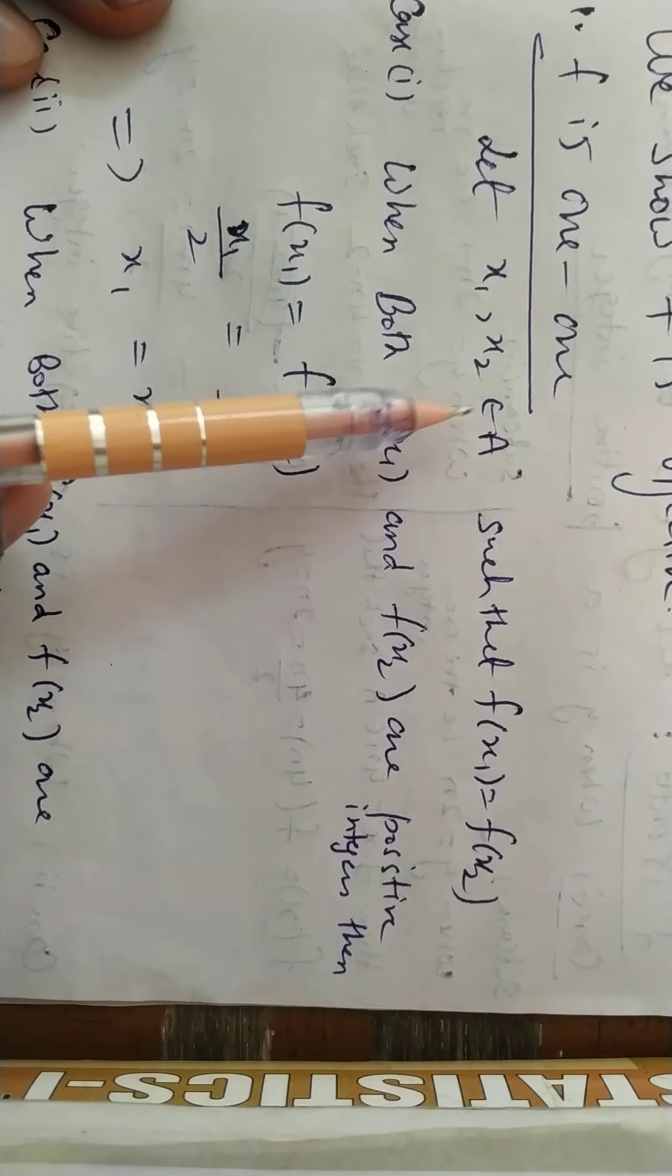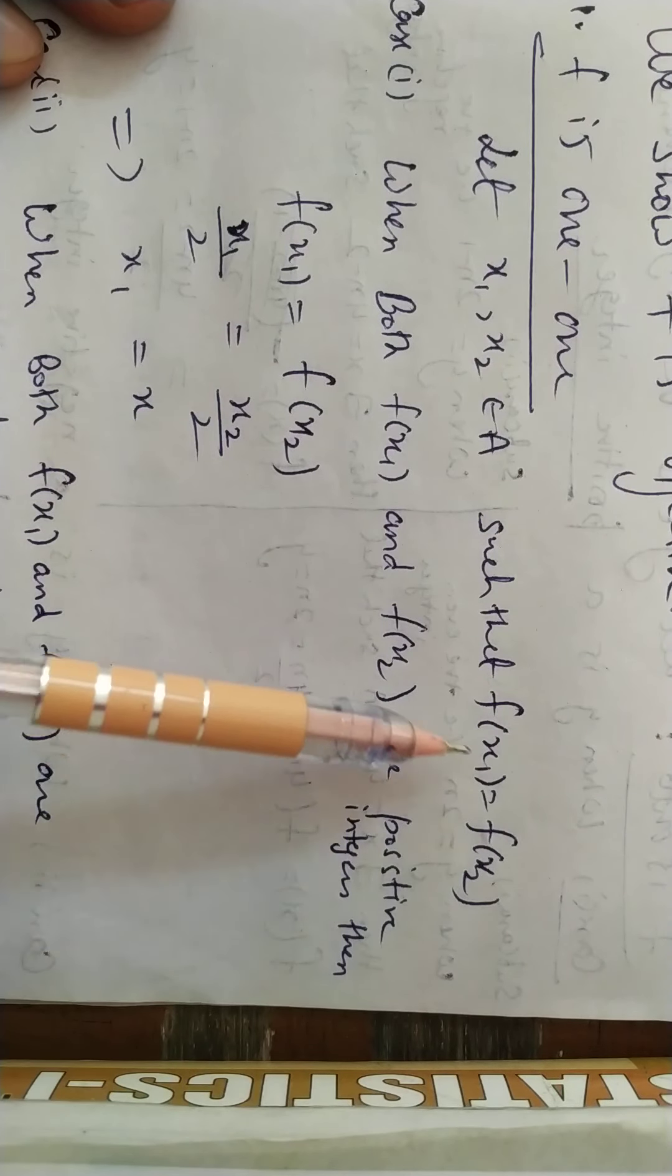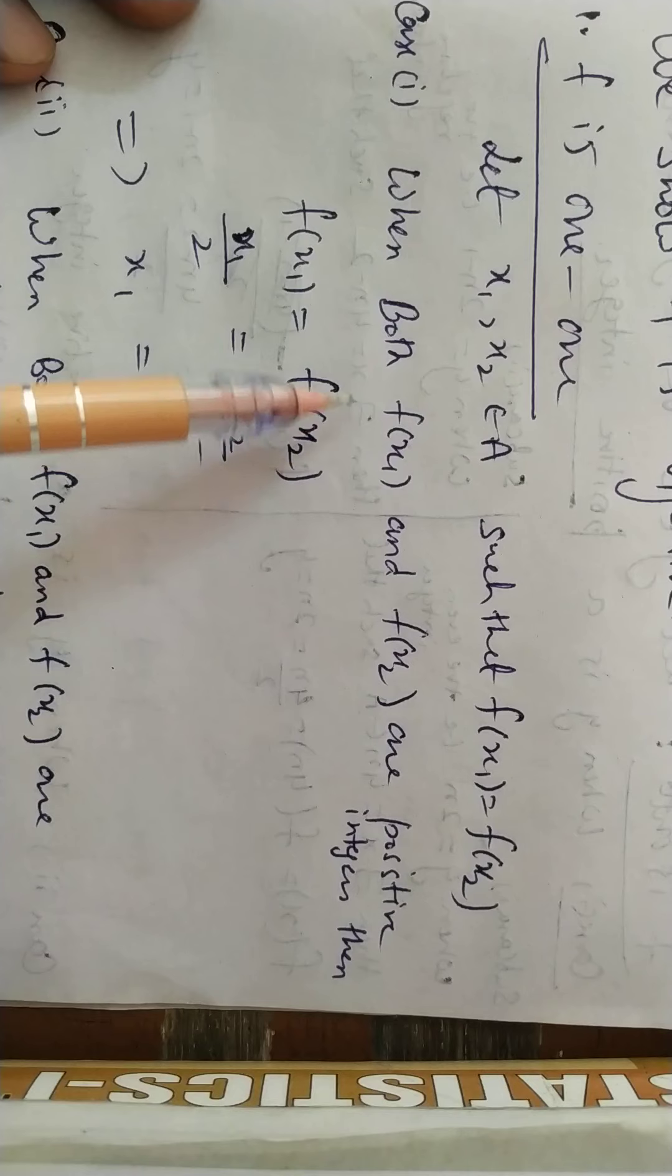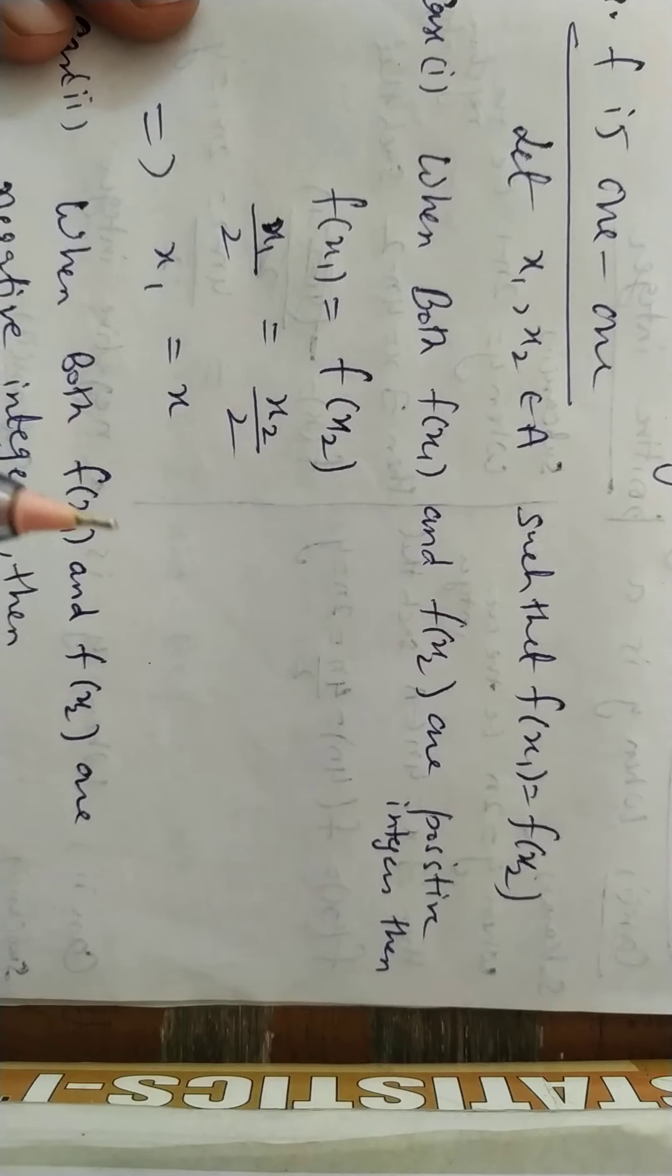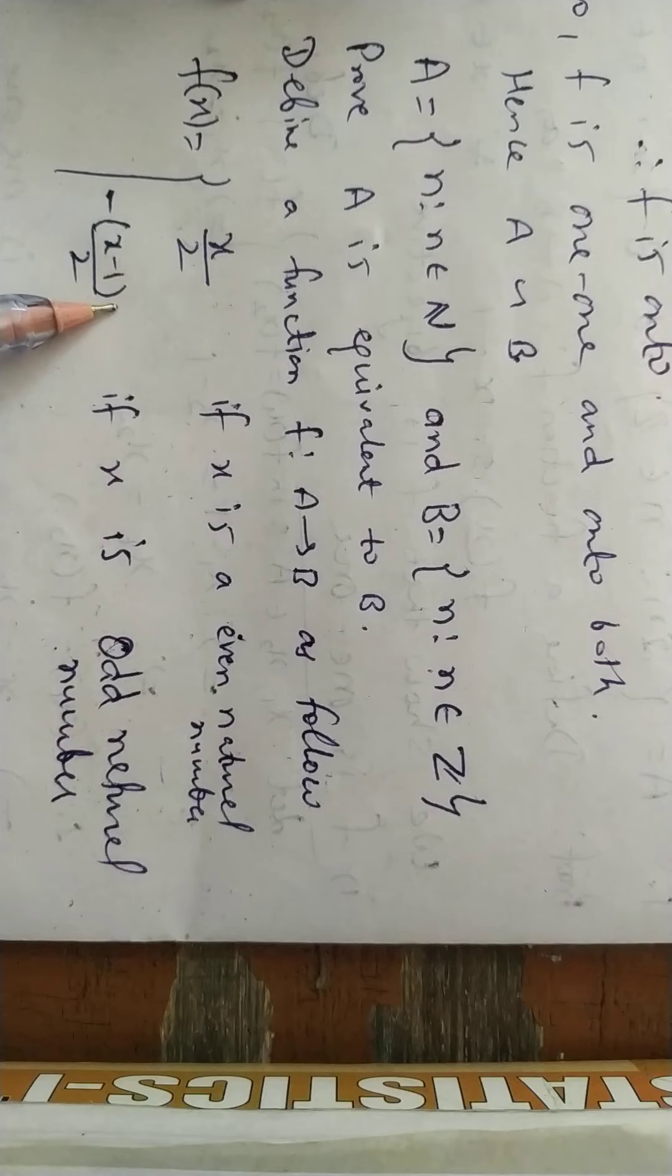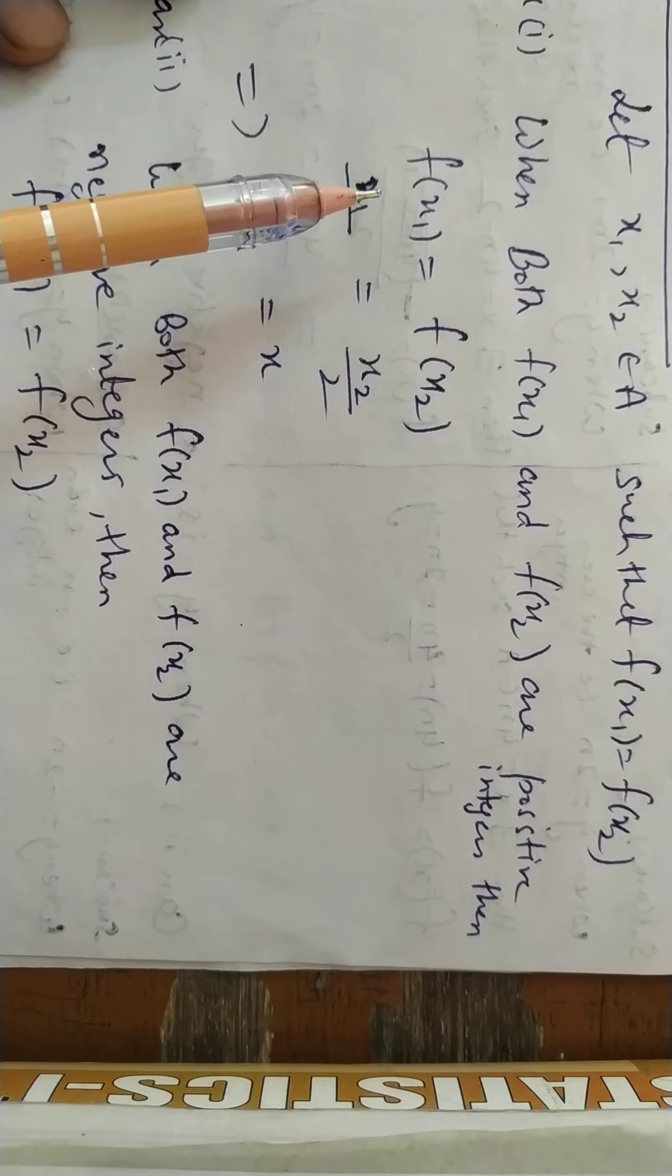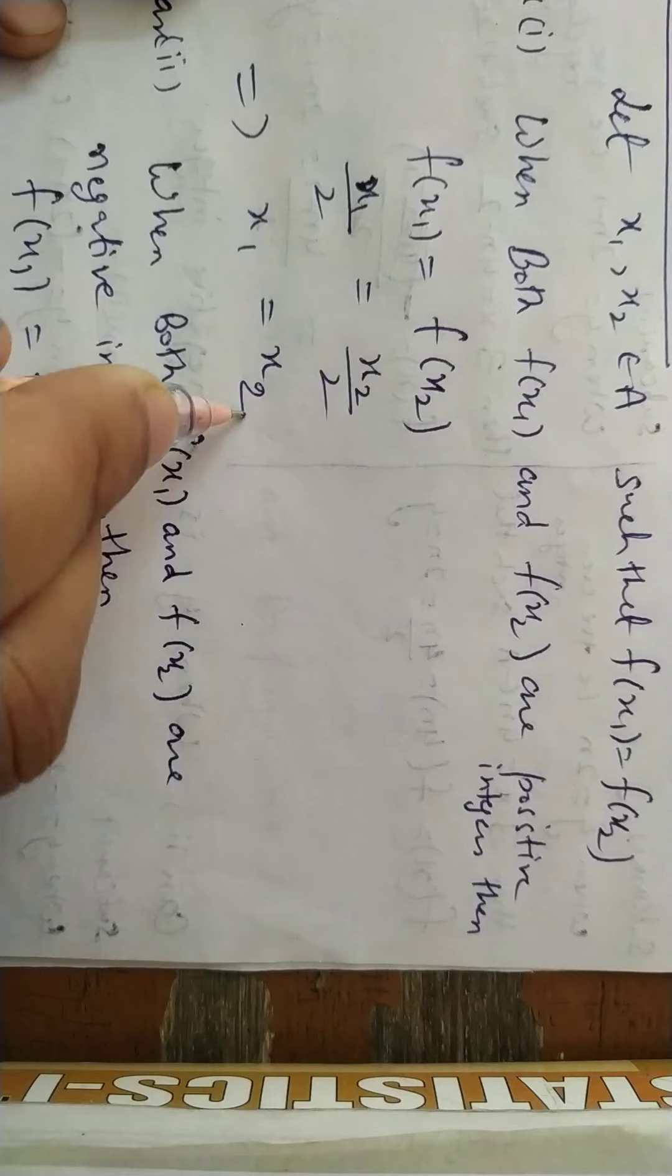So f is 1-1. Let x1, x2 belong to A such that f(x1) = f(x2). Now we have two possibilities: either both are positive or both are negative, since both are equal to each other. Let's assume first that both f(x1) and f(x2) are positive integers. Then we defined the function using x/2, so the answer will be x1/2 = x2/2. Canceling 2 from both sides gives x1 = x2.